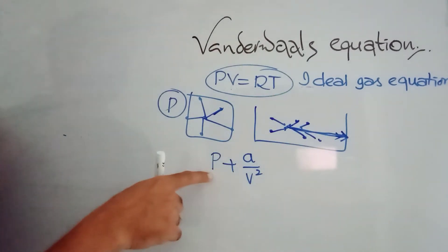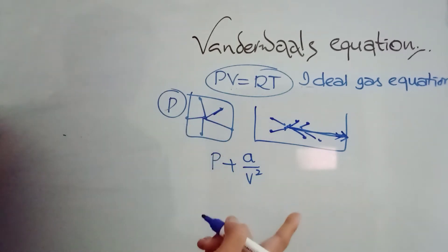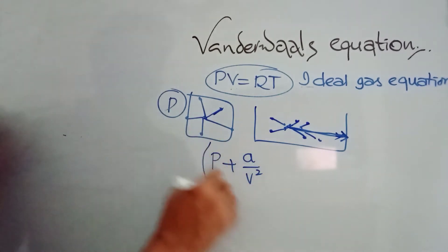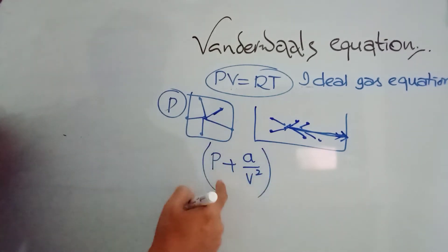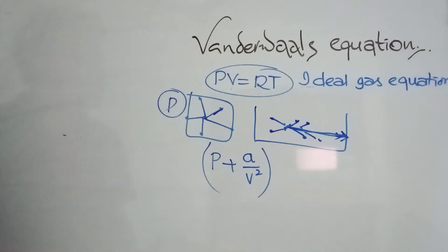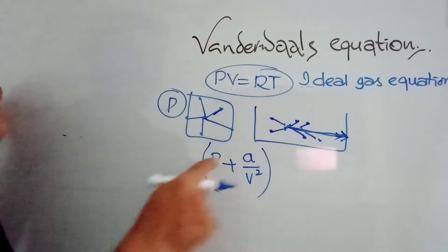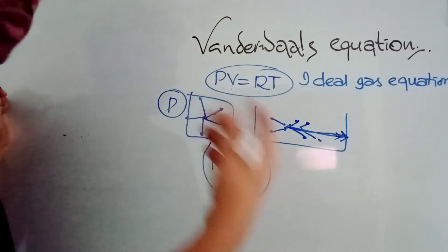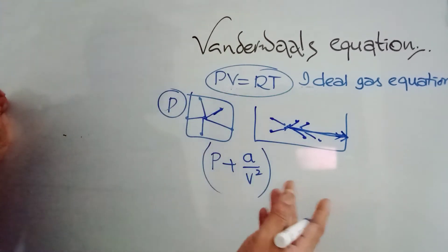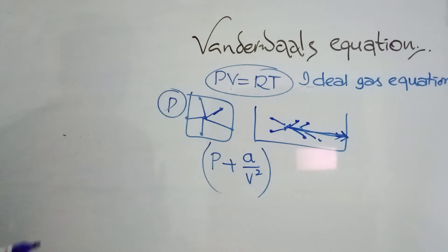A/V² is the measure of the attractive forces controlling the molecule when it is going to hit the wall. So this is the pressure being measured, but more than this pressure is expected. Therefore, the corrected pressure term is P + A/V². This is the correction in the pressure term.